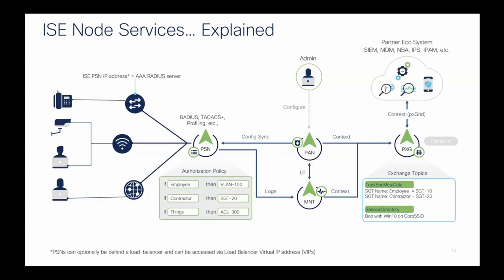Partners and other security products subscribe to PX Grid to get updates about new sessions, new tags, and network changes. The other cool thing is Adaptive Network Control, or ANC. Because we have a trusted relationship with those products, if they detect bad network behavior or vulnerable endpoints, they can use Adaptive Network Control to make a change of authorization through ISE, updating the session status so those endpoints can't keep causing problems on the network.